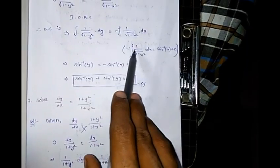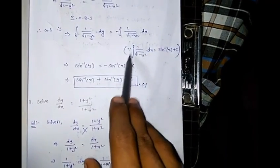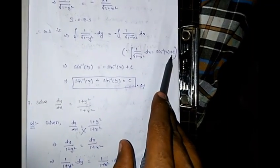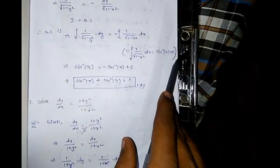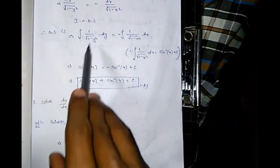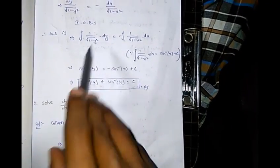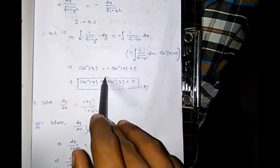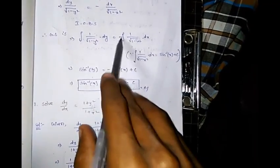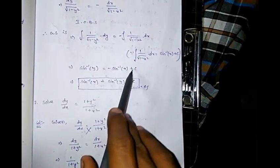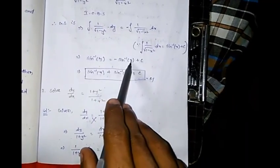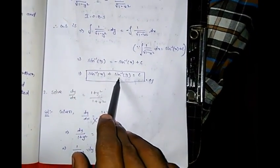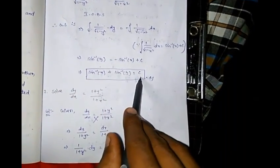Using the standard integration formula, ∫1/√(1−x²) dx = sin⁻¹x + c. Therefore, sin⁻¹y = −sin⁻¹x + c, which gives sin⁻¹x + sin⁻¹y = c. This is the general solution.